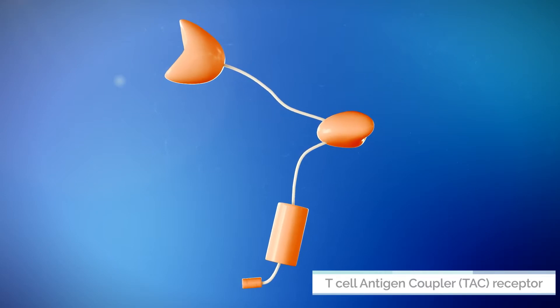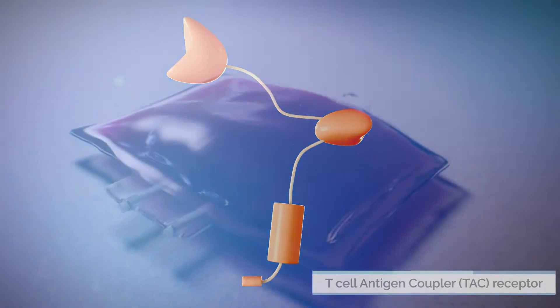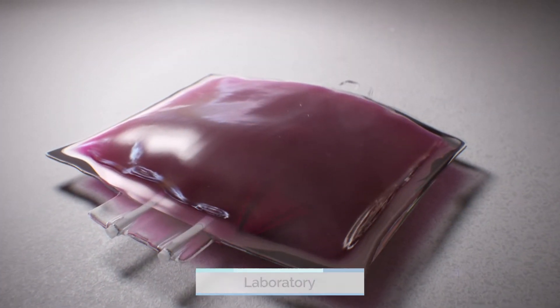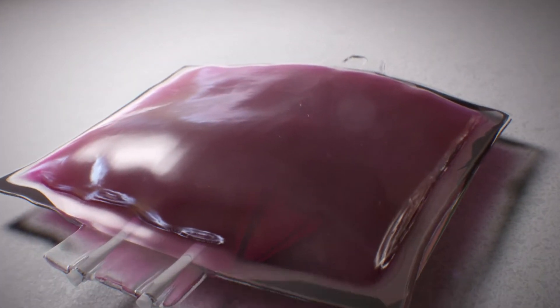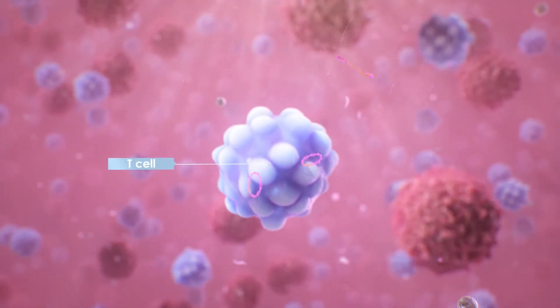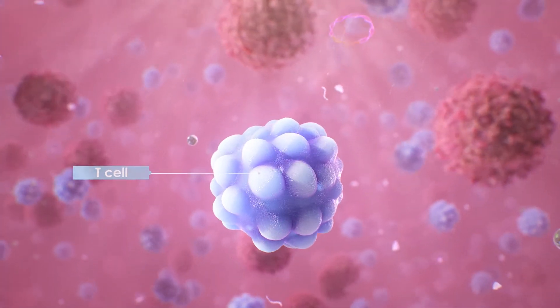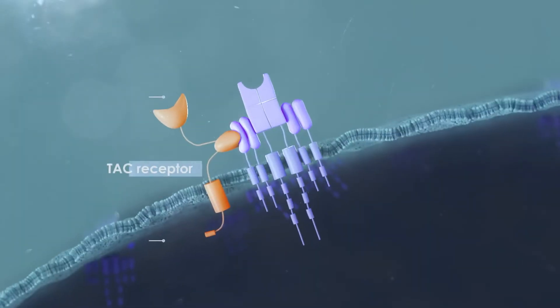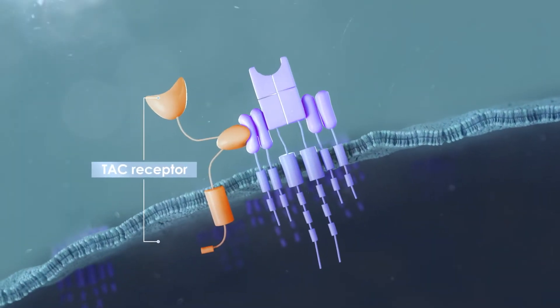Let us explore how the TAC receptor activates T-cells to eliminate tumor cells. T-cells are engineered in the laboratory with the TAC transgene to express the TAC molecule across the cell membrane. These modified cells are called TAC T-cells.